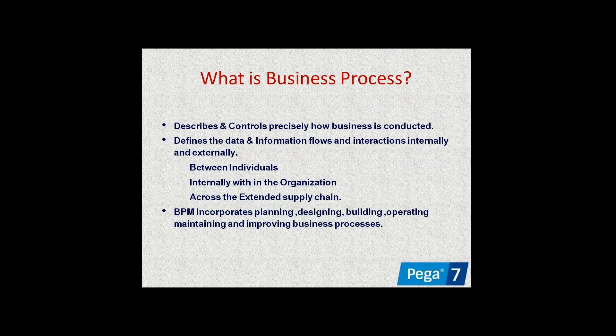Business process means managing the business within the application — all planning is done and everything is connected internally. In any application there is a connection between people to application, application to application, and application to people. Business process creates connections between individuals within the organization and also to third-party applications.